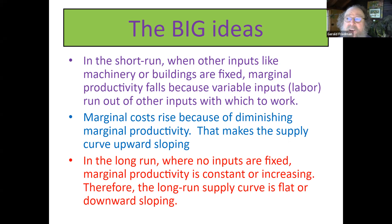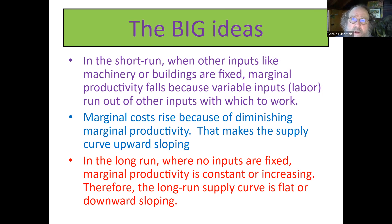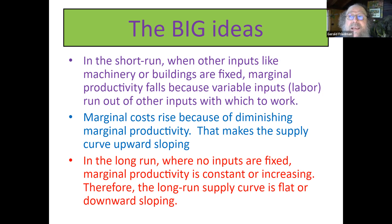How long is the short run? It depends on the industry — maybe a couple of years. Automobile manufacturing: it used to take about five years to bring in a new car line. Now companies are more nimble — maybe three years from start to finish to engineer a new car, including planning how it will be made and getting the machinery. Airliners could be a decade or more.